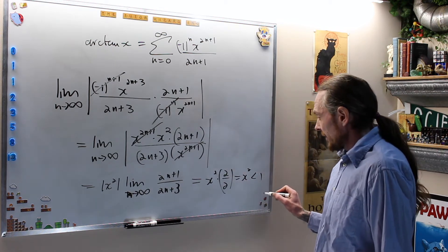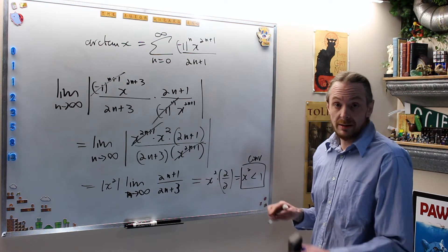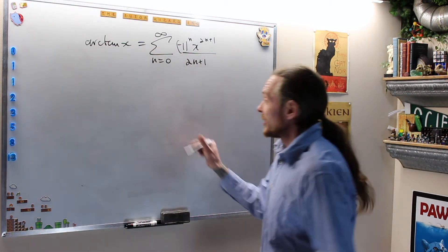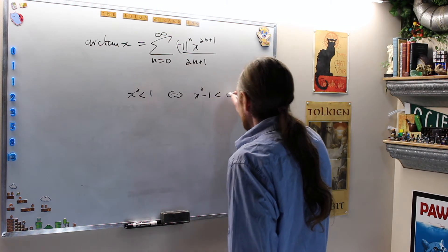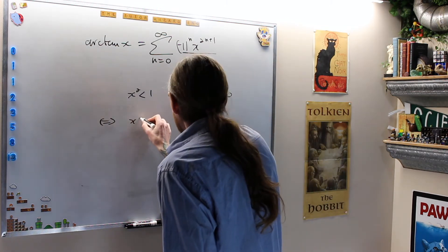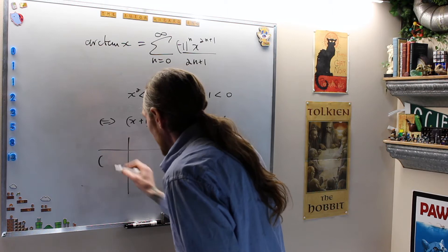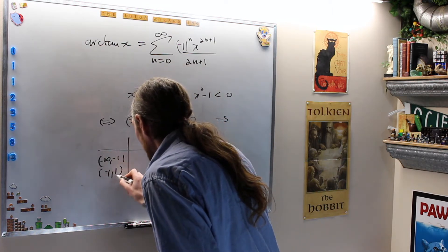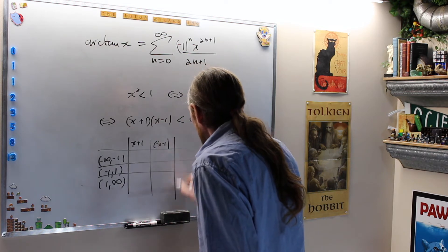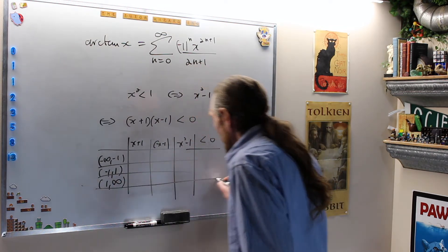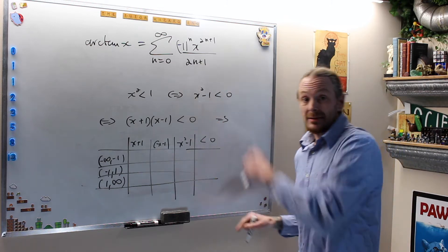This limit is less than 1 if and only if x squared is less than 1. So for convergence we need x squared less than 1, or x squared minus 1 less than 0, which factors as (x+1)(x-1) less than 0. We set up a sign table with test regions: negative infinity to negative 1, negative 1 to 1, and 1 to infinity, analyzing the signs of x plus 1 and x minus 1.